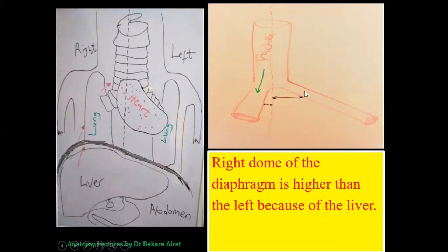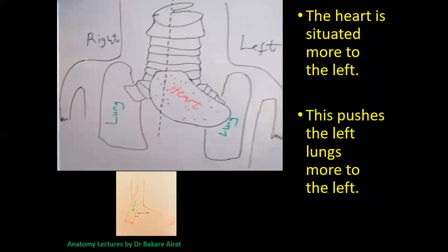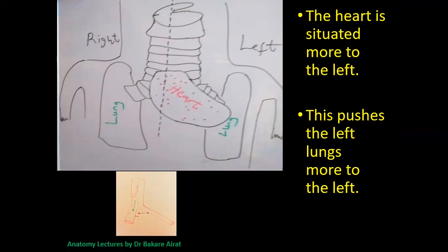On the other side, the left primary bronchus is longer because the left lung is not as close to the point of bifurcation. Additionally, the heart is more situated to the left, pushing the left lung further away from the midline. This makes the left primary bronchus travel a longer distance, justifying why it tends to be longer and narrower.